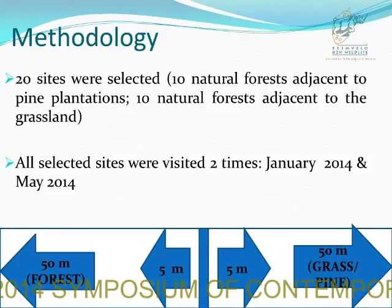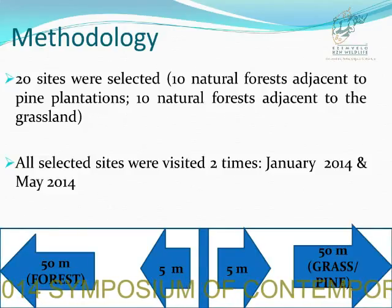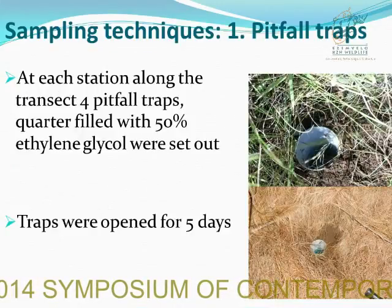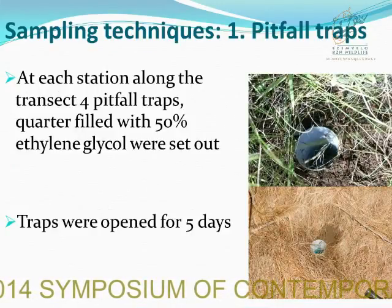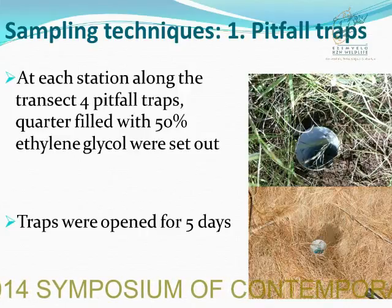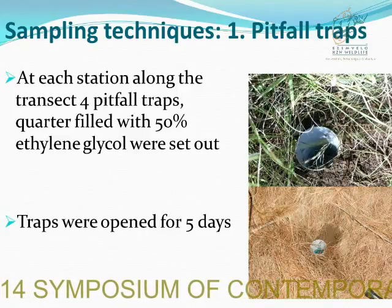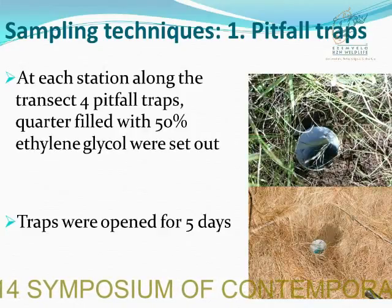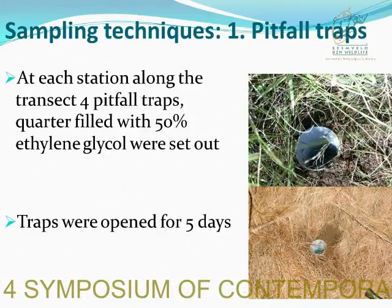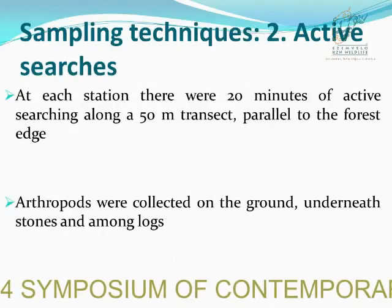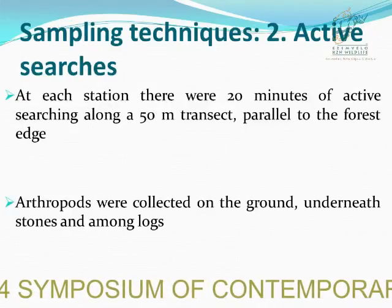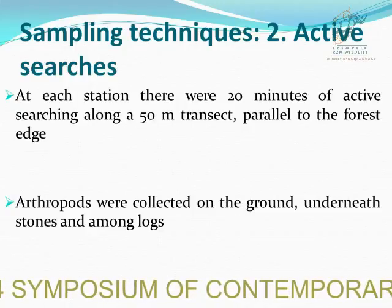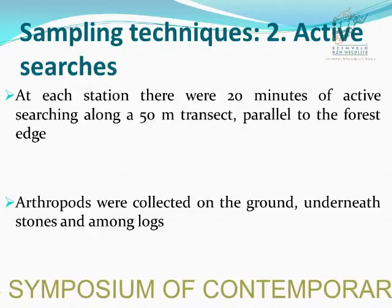All sites were visited two times: January 2014 and May 2014. We used two sampling techniques: pitfall traps and active searches. At each station, four pitfall traps were set out and left open in the field for five days, filled with 50% ethylene glycol. For active searches, at each station we established a 50-meter transect parallel to the forest edge and conducted 20 minutes of active searching.